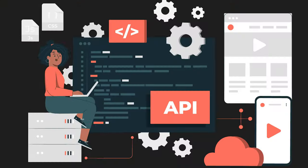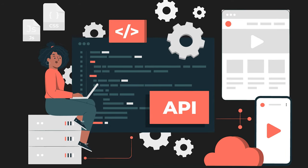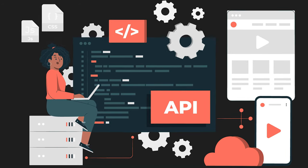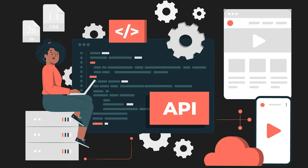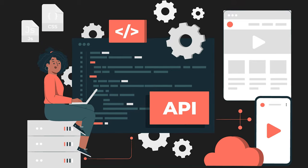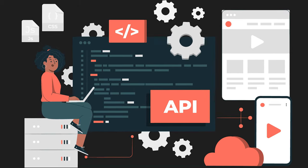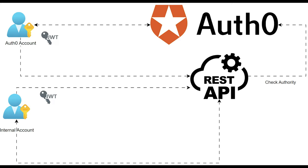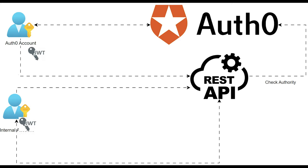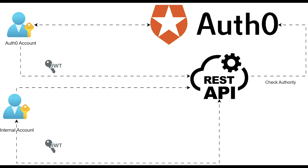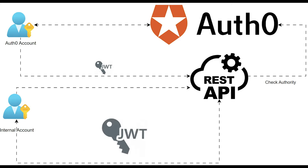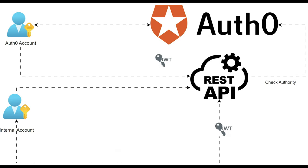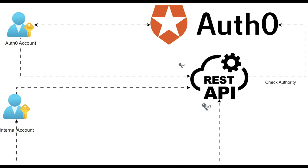Let's go back to our story. One of the requirements is the implementation of an authentication mechanism. The original proxy has typical token-based authentication, but the new requirement is to add the possibility to validate tokens from multiple token providers. In my case, a custom JWT token and an Auth0 token.